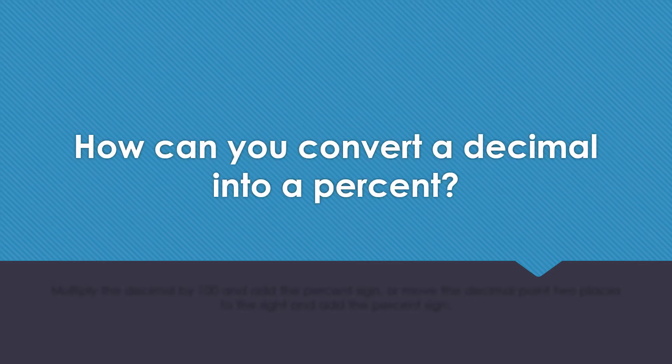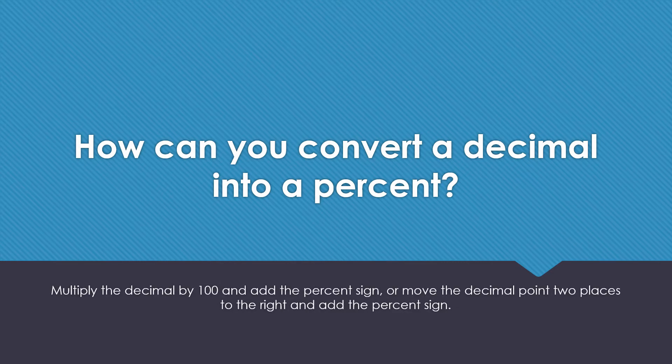How do you convert a decimal into a percent? Multiply the decimal by 100 and add a percent sign, or you can move the decimal point two places to the right and add a percent sign.